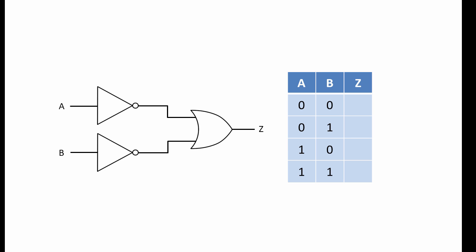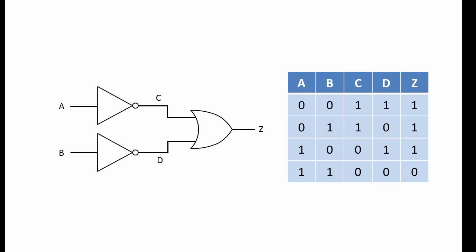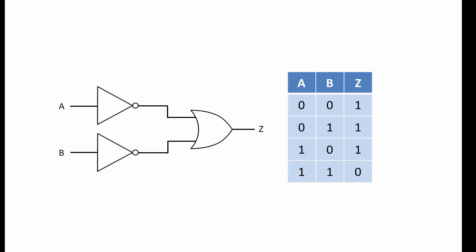Here is an example involving three logic gates. Values of A and B are being passed through NOT gates before being combined through an OR gate. To produce a truth table for this combination, it is useful to consider points C and D. Each value of C is simply the inverse of each value of A. Each value of D is simply the inverse of each value of B. Now that we have values for C and D, we can combine them through an OR gate to give us each value of Z. You might have noticed that this truth table is exactly the same as the truth table for the NOT AND combination we saw earlier. It is not uncommon for different combinations of gates to produce the same output.